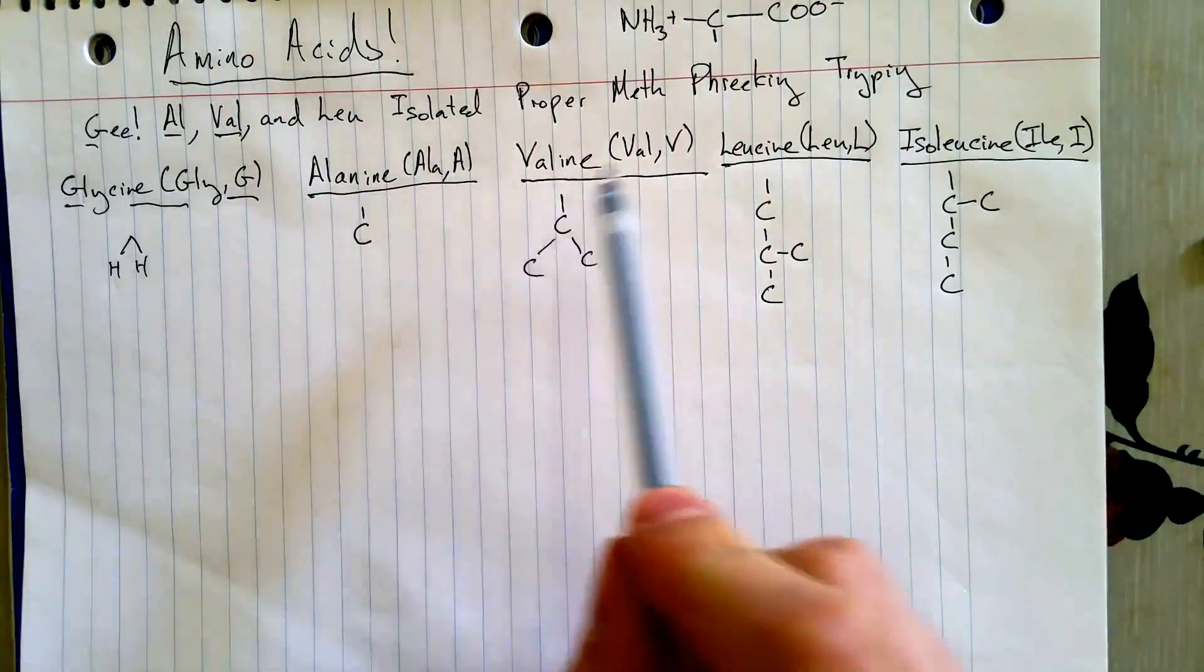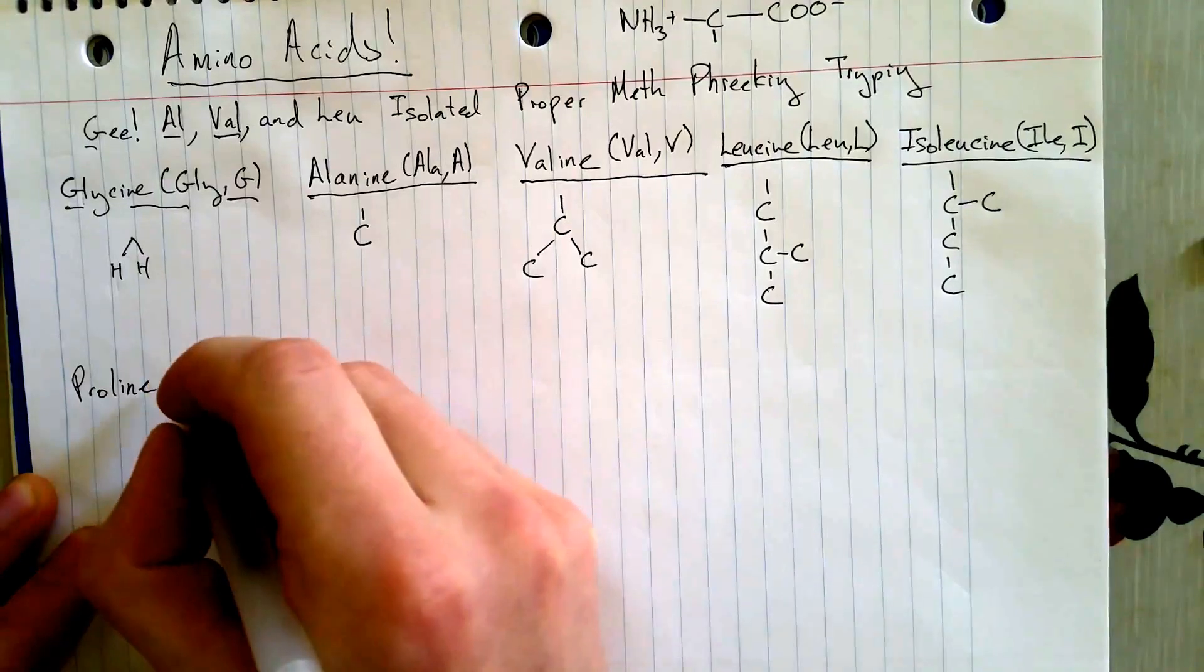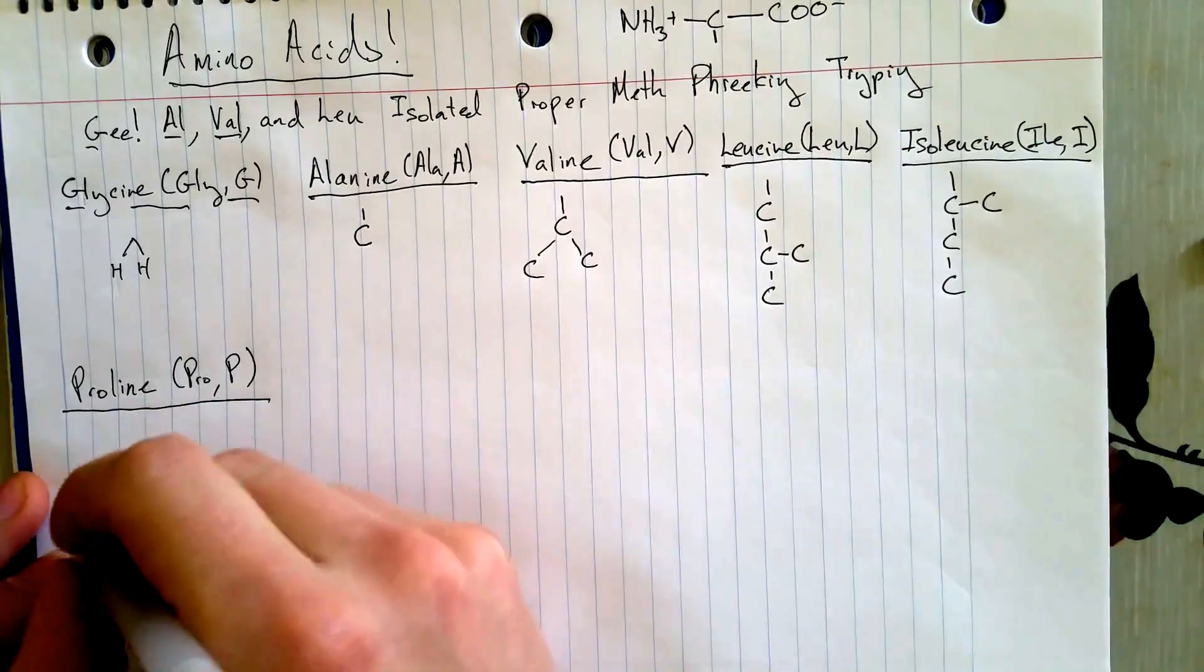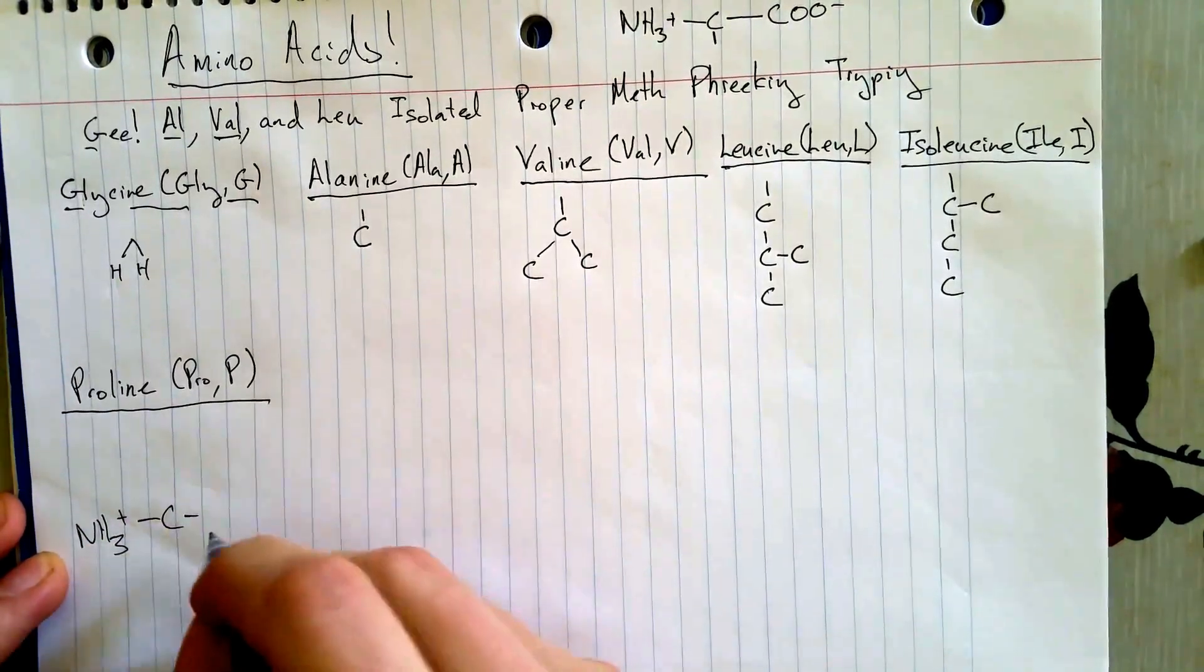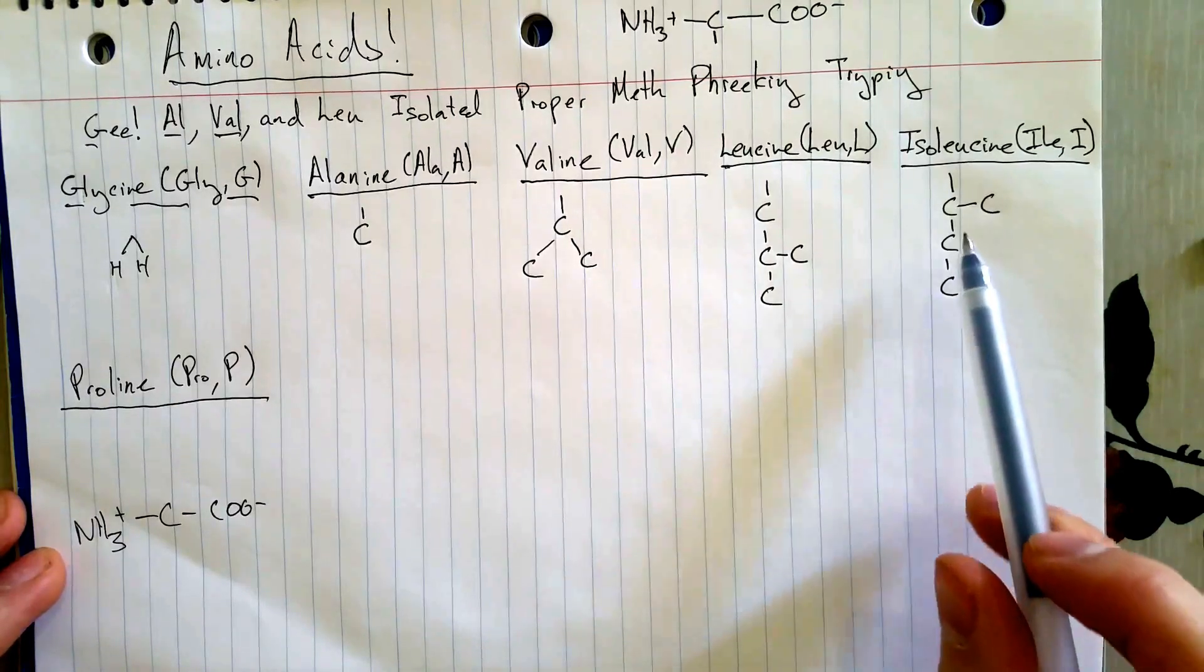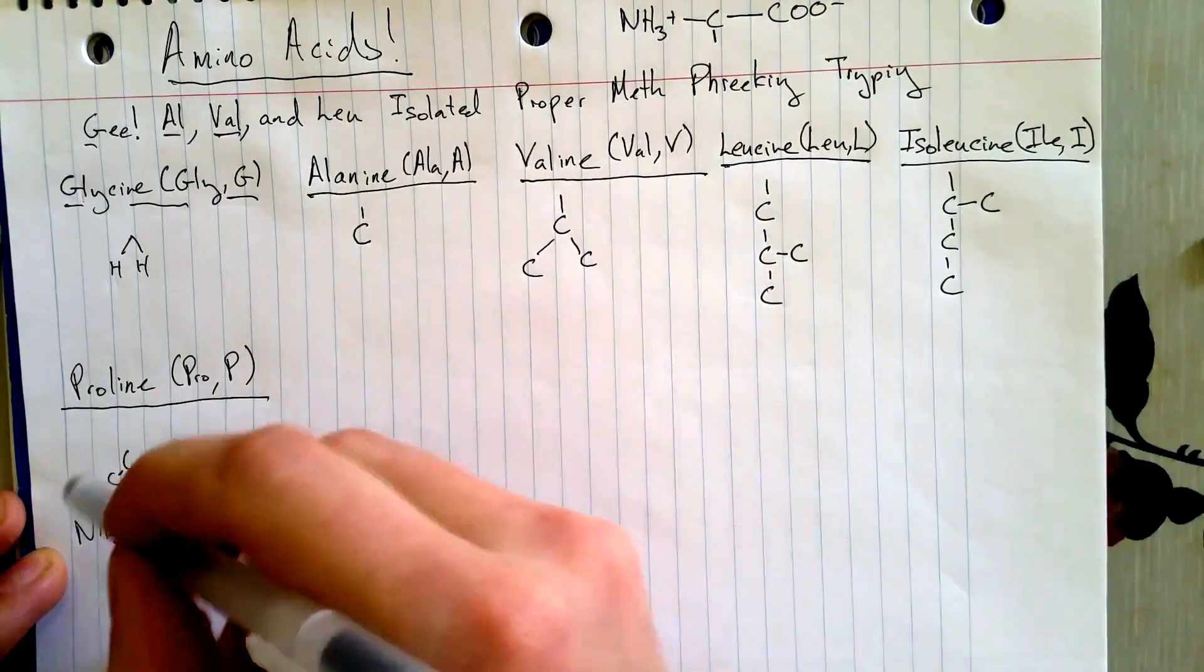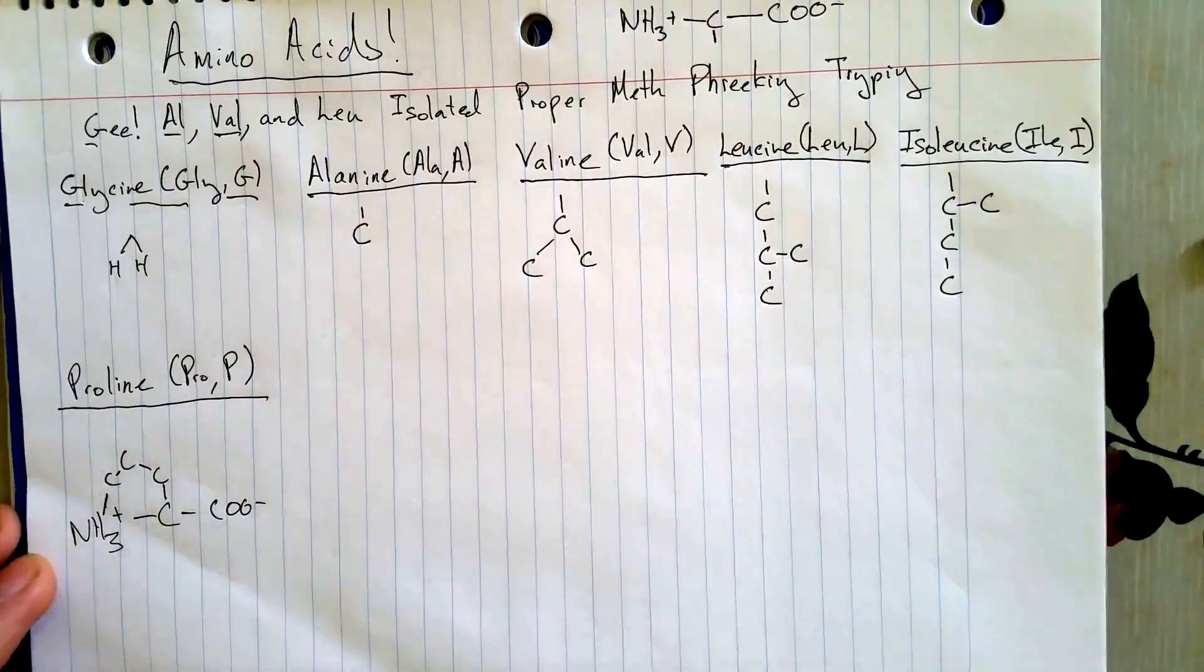So G, Al, Val, and Leu finally isolated some proper proline. Pro and P. So very logical three-letter abbreviation and one-letter code. So for this we need to go back to the original diagram of the amino acid. And it is also a three-carbon chain. But in this case, the chain is attached back, it attaches to the amino group.